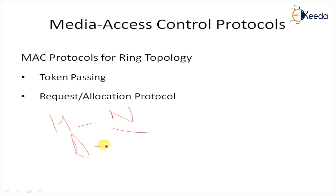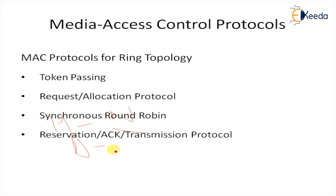The third protocol is Synchronized Round Robin, SRR, which is a collision-free protocol for ring networks where each node is equipped with a tunable transmitter and a fixed receiver. The last protocol is the Reservation Acknowledgement Transmission protocol. This protocol is designed for ring networks where each node is equipped with a Wavelength Add Drop Multiplexer, WADM. A WADM is a device that selectively adds, drops, or passes through optical signals according to wavelength.